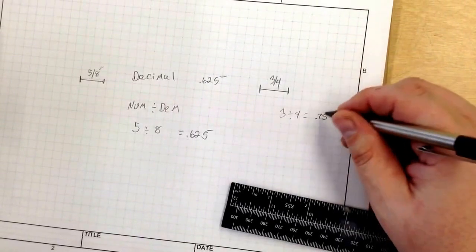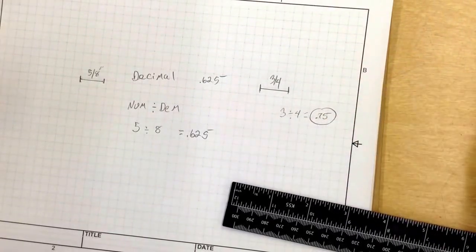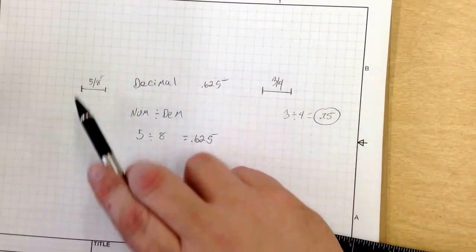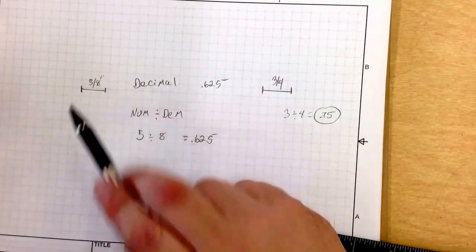So the decimal equivalent is .75. Whenever you need to convert from fraction to decimal, it's always numerator divided by denominator.